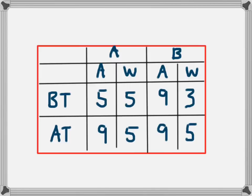Summarized in this table: before trade, Country A had 5 apples and 5 units of wood, and Country B had 9 apples and 3 units of wood. After specialization and trade, Country A now has 9 apples and 5 units of wood — an increase of 4 apples. Country B has gone from 9 apples and 3 units of wood to 9 apples and 5 units of wood — an increase of 2 units of wood. By specializing in the products in which they had a comparative advantage, both economies have been able to benefit.